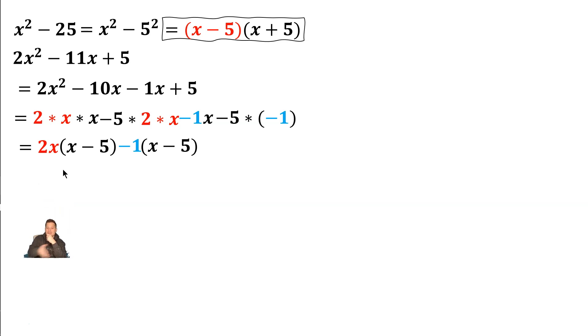Now, as you can see, x minus 5 is a common factor. So let's put these together. It's going to be 2x minus 1 times x minus 5, that's the factored form of the trinomial.